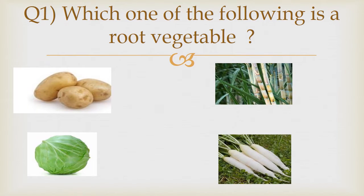Question number 1. Which one of the following is a root vegetable? Option A: Potato. Option B: Sugarcane. Option C: Cabbage. Option D: Radish. The answer is Option D — Radish.